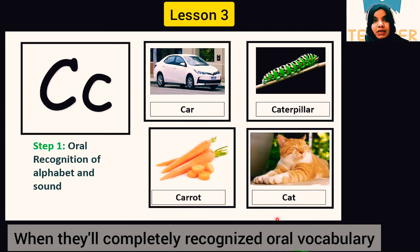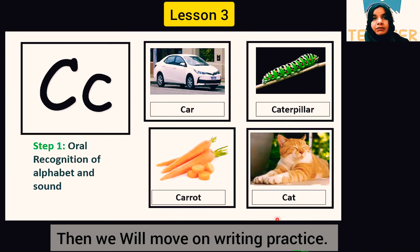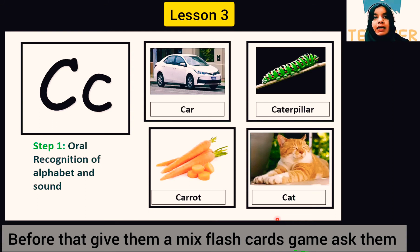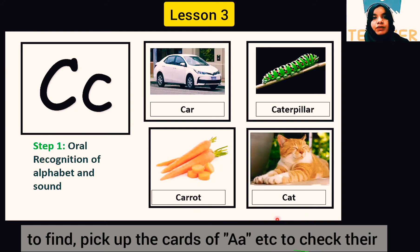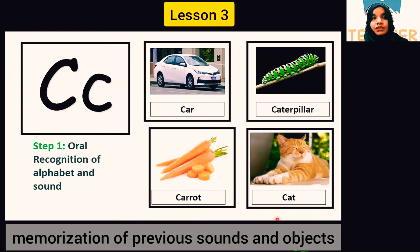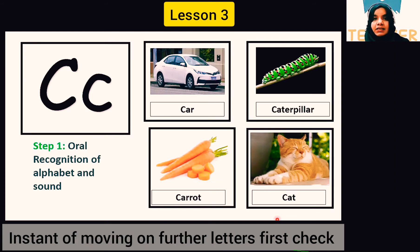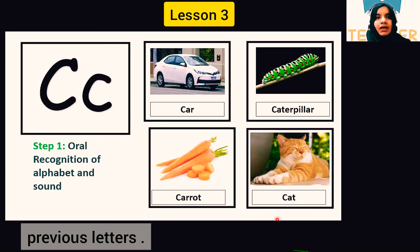When their oral recognition is done very well and each object is identified, then move to words, writing practice, and coloring. Now that we have recognized letters A, B, and C, mix all the cards together and ask them to find the correct letter — what comes with B, what comes with A, what comes with C. Mixing cards tests whether their previous sounds and alphabet knowledge are strong enough to move ahead.